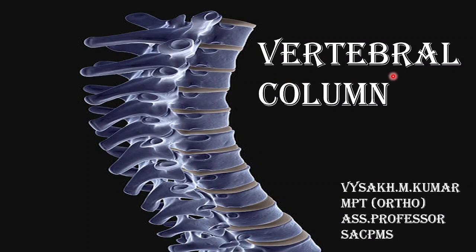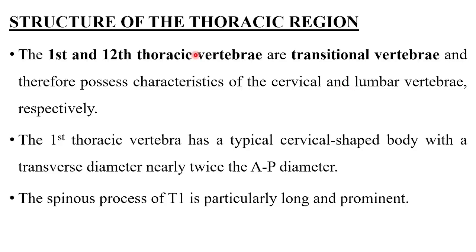In this video we will be explaining in detail about the kinetics and kinematics of the thoracic vertebrae. Coming to the structure of the thoracic region, the first and 12th thoracic vertebrae are transitional vertebrae and therefore possess the characteristics of your cervical as well as your lumbar vertebrae respectively.